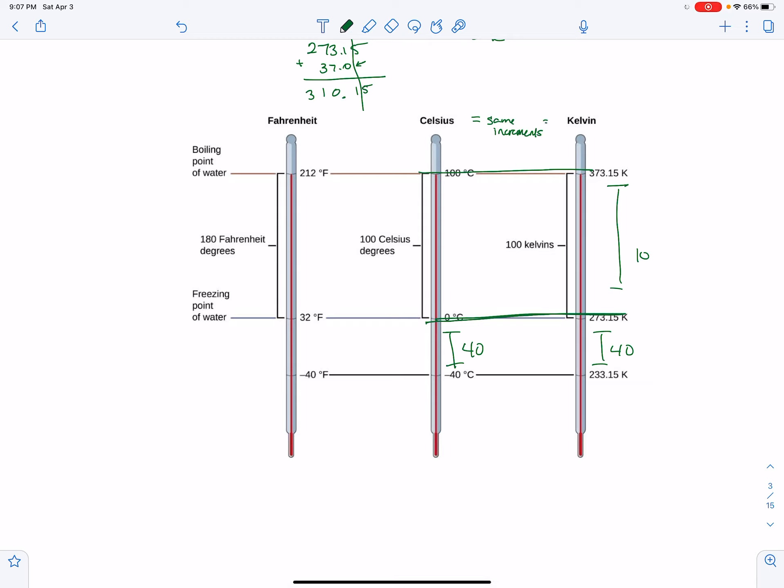Now you look at the Fahrenheit and you see how they're completely off, like the 180 right there. That increment is not the same increment as 100. So the Fahrenheit chart is very different from how it reads temperature than the Celsius or the Kelvin chart.